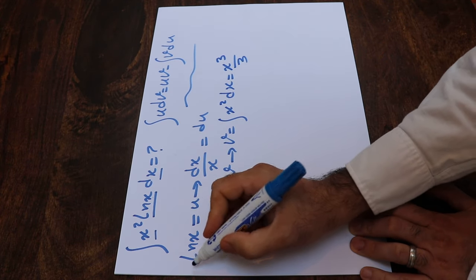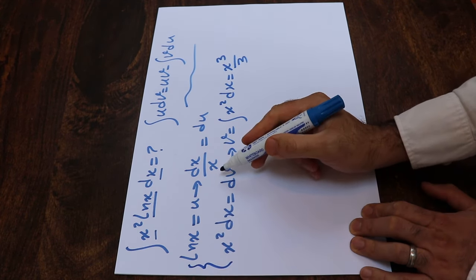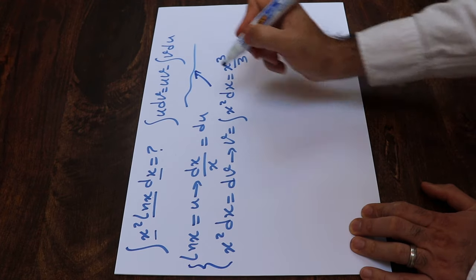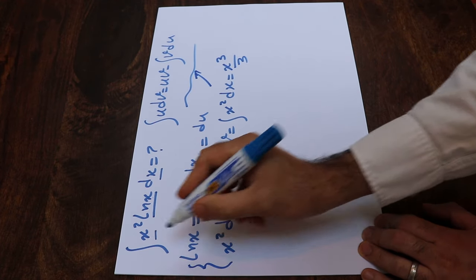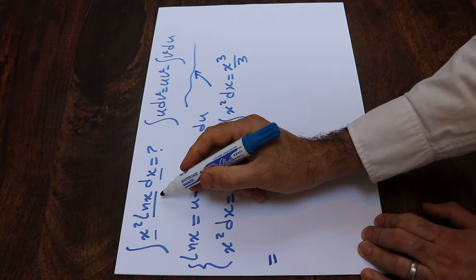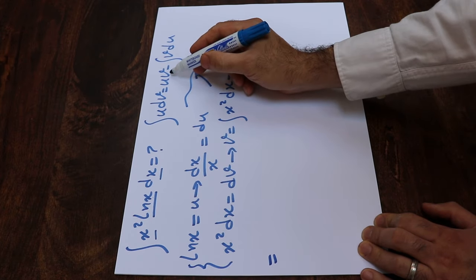So here all you need to do is substitute this equation into this formula. Therefore, this integral will be equal to uv.